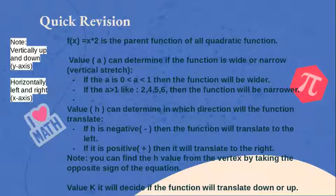Value k will decide if the function will translate down or up. Note: vertically up and down is the y-axis, horizontally left and right is the x-axis.